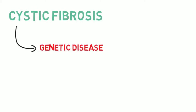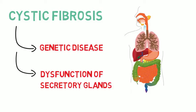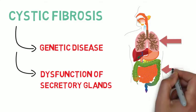Cystic fibrosis is a genetic disease that causes dysfunction of secretory glands and affects various parts of the body, especially the lungs and digestive system.